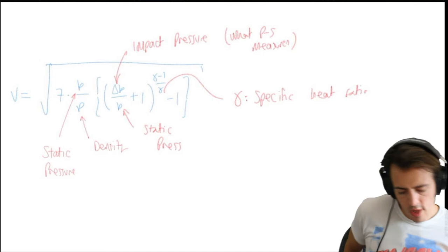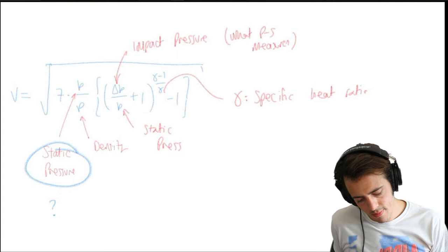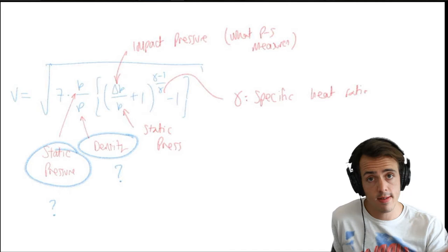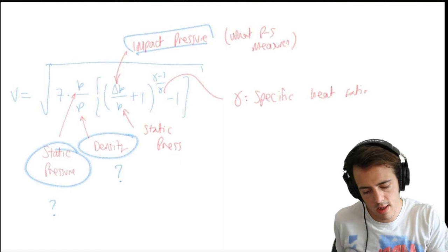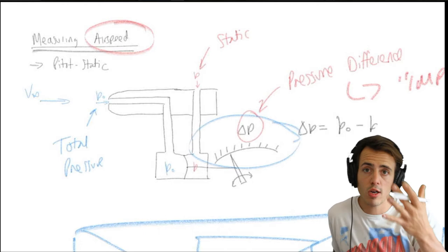What calibrated airspeed effectively does is solve the true airspeed equation with rho equal to rho at sea level (1.225 kg/m³) and pressure equal to pressure at sea level (101,325 Pa). So calibrated airspeed, V_c, equals the square root of 7 times P_sl/rho_sl times the quantity (delta P / P_sl + 1)^((gamma-1)/gamma) minus 1. Calibrated airspeed equals true airspeed if and only if altitude equals zero.